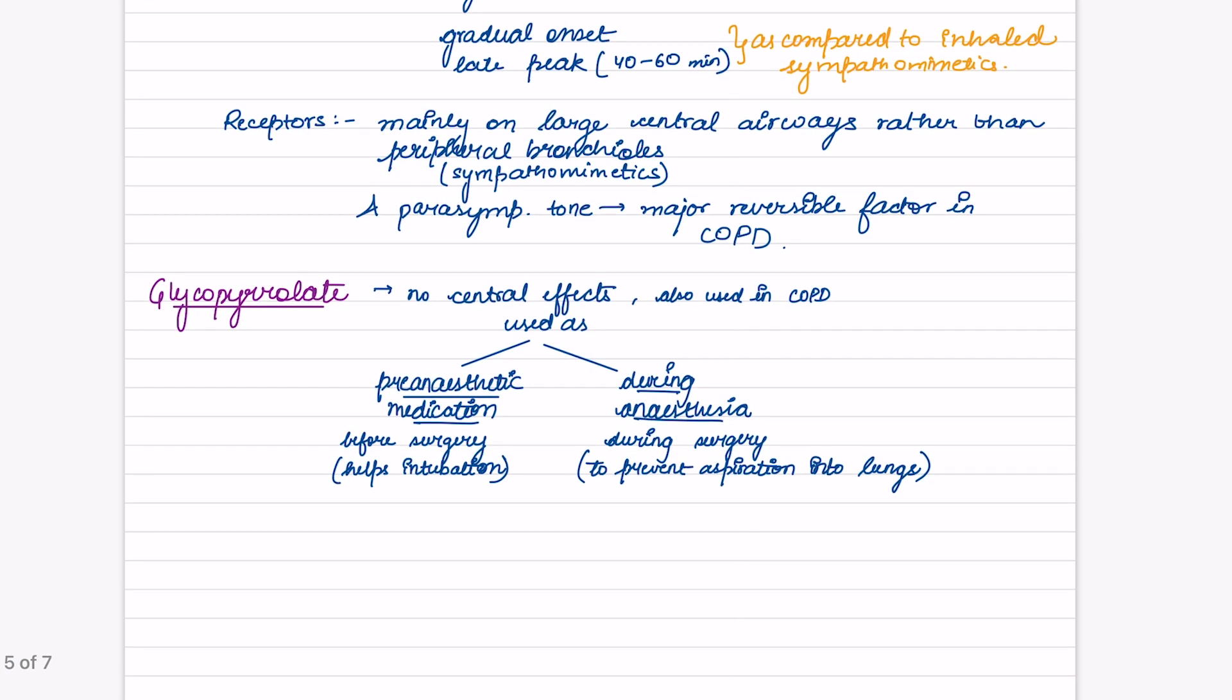Coming to glycopyrrolate: it has no central effects. It is also used in COPD and is used as pre-anesthetic medication and during anesthesia. Pre-anesthetic medication before surgery to help in intubation, and during anesthesia, that is during surgery, to prevent aspiration into lungs.